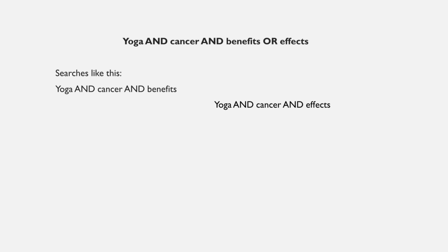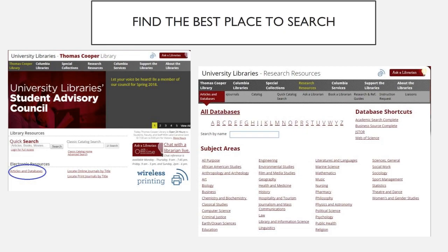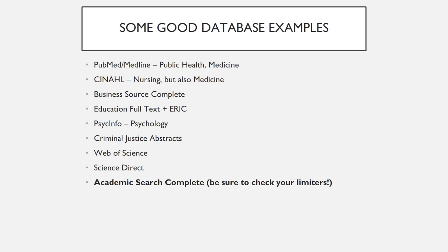Once you have nailed down a strategy for deploying search terms, your next step is to find the best place to search. To identify a good database to discover articles and information on your topic, start at library.se.edu and click on the Articles and Databases link. This will take you to a page where you can start identifying the best places to search. You can identify a subject area that corresponds with your topic, which will lead you to relevant databases. Some good database examples include products like PubMed, Medline, a public health and medicine database, as well as others like PsycInfo, a psychology database, as well as interdisciplinary databases like Web of Science and Academic Search Complete.